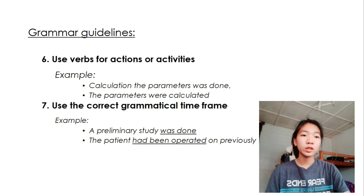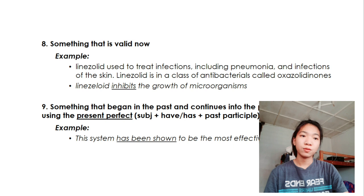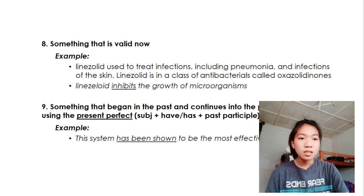Another is use verbs for actions or activities. For example, calculation the parameters was done. Instead of that, we can use the parameters were calculated. Use the correct grammatical time frame. Instead of a preliminary study was done, we can use the patient had been operated on previously. Next, is something that is valid now. For instance, linazoloid used to treat infections, including pneumonia and infections of the disease. Linazolid is in a class of antibacterials called oxazolidinones. We can say it as linazoloid inhibits the growth of microorganisms.